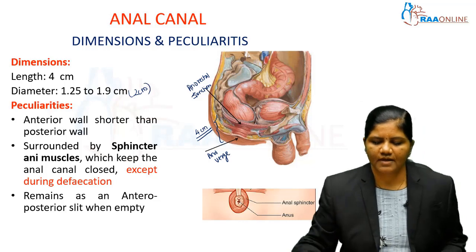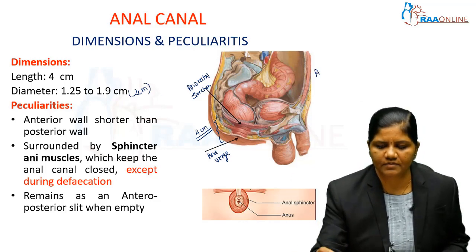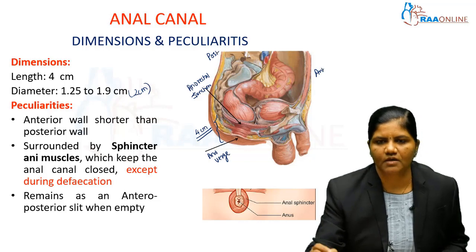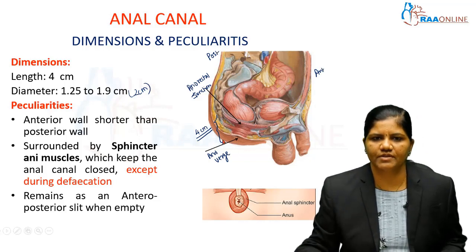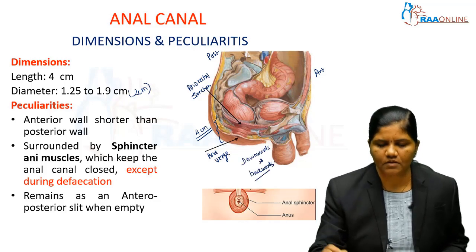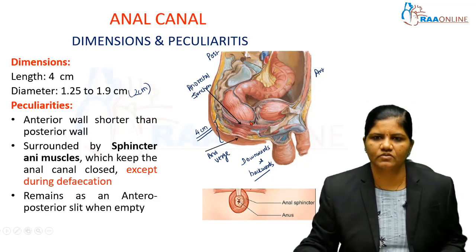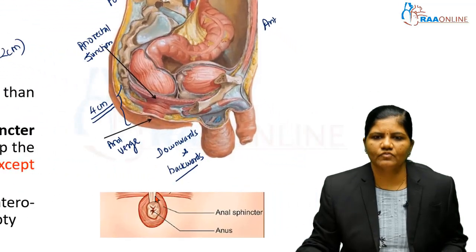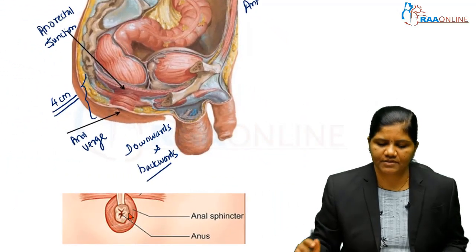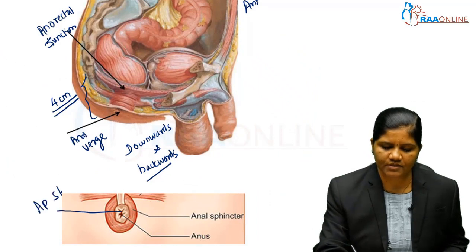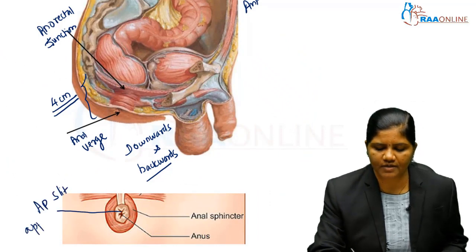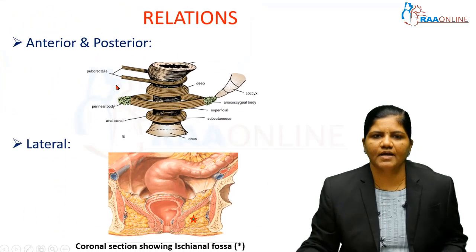The anterior wall is shorter than the posterior wall. The direction of the anal canal is directed downwards and backwards. The anal canal is surrounded by sphincters, which maintain it in a closed position except at the time of defecation. While empty, it remains like an anteroposterior slit because of the approximation of the anterior and posterior walls.